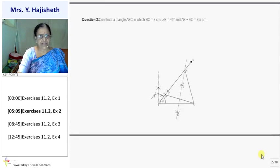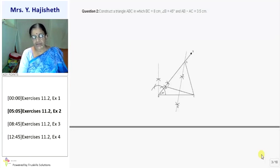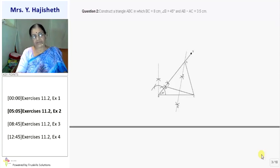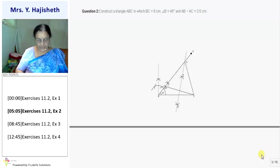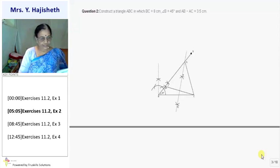Second construction. You are given: construct a triangle ABC in which base is given, base angle is given, difference of two sides AB minus AC is given. So AB is greater than AC. So I will take that point on in a direction of BX. If AB minus AC is given, then we have to take point on the opposite direction of BX. Now here what to do.